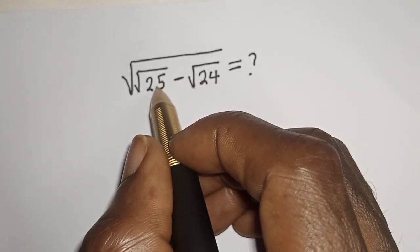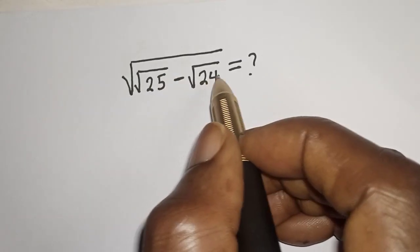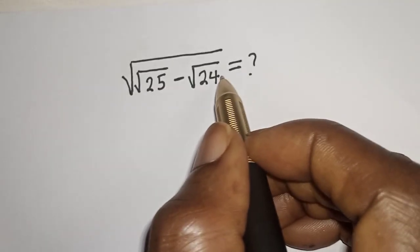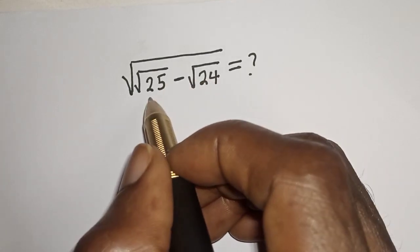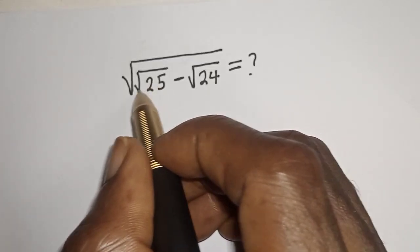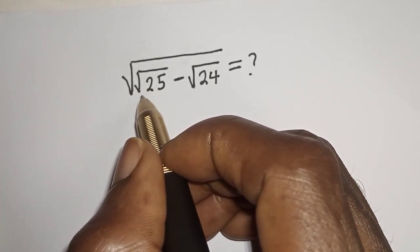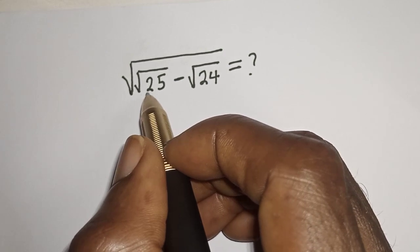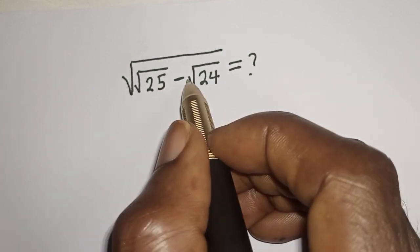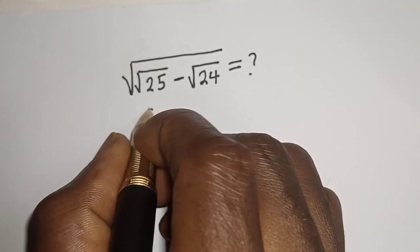Square root of square root of 25 minus square root of 24 is equal to what? Hi everyone, welcome to my class. In this class we want to evaluate this nice math problem. But before we proceed, please don't forget to like, share, comment and subscribe.